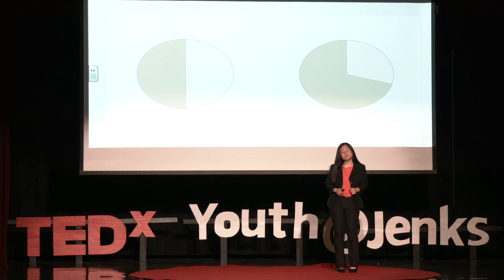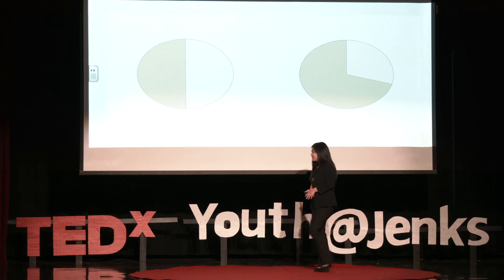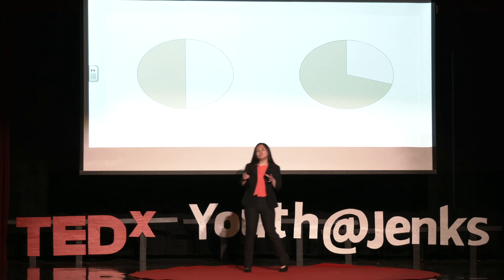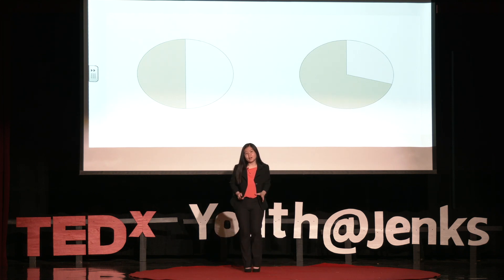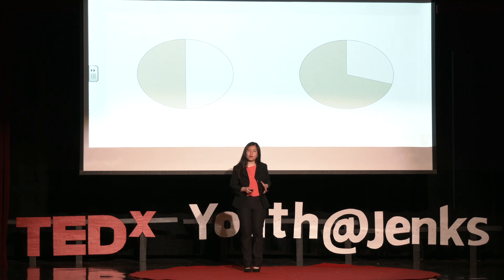Would you cut it so that both of the pieces are even, or would you cut it so that one piece is bigger than the other? Now let's change it up a little bit, and let's say that you're still the person cutting, but this time your friend gets to pick first. How would you cut the cake then? Would you cut it in even pieces, or would you still cut to where one is bigger than the other?